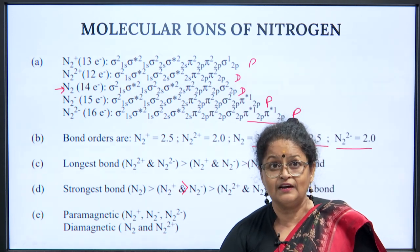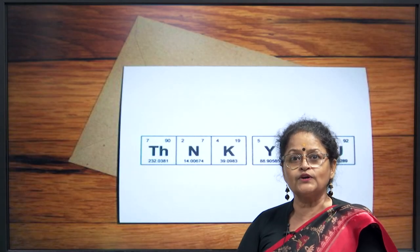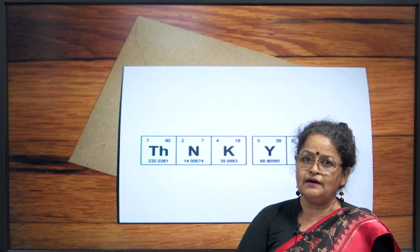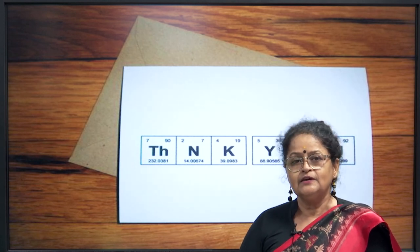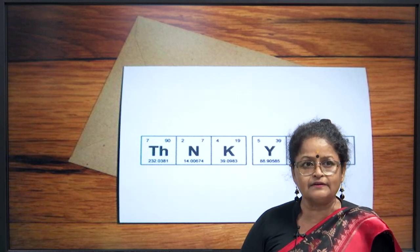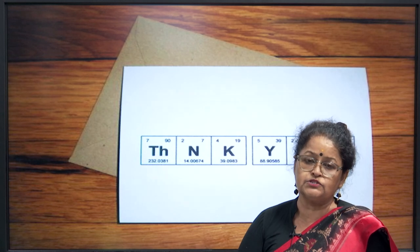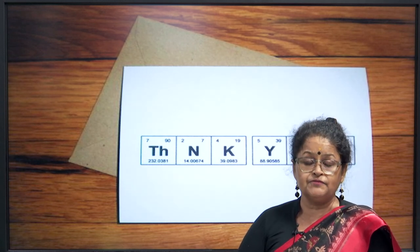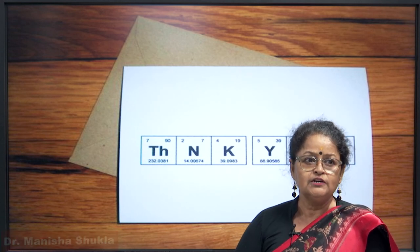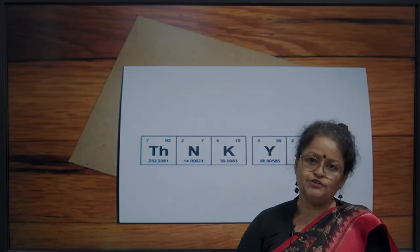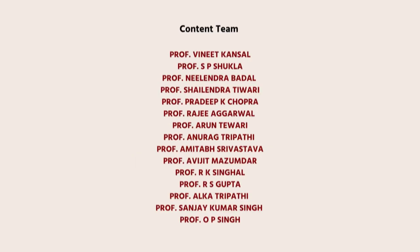Today's class covered the study of homonuclear diatomic molecules. We saw the MO diagrams of these homonuclear diatomic molecules, how bond order is calculated, and what kind of magnetic character — diamagnetic or paramagnetic — they exhibit. In the next lecture, the third lecture, we will take up heteronuclear diatomic molecules. This is your teacher, Dr. Manisha Shukla — thank you.